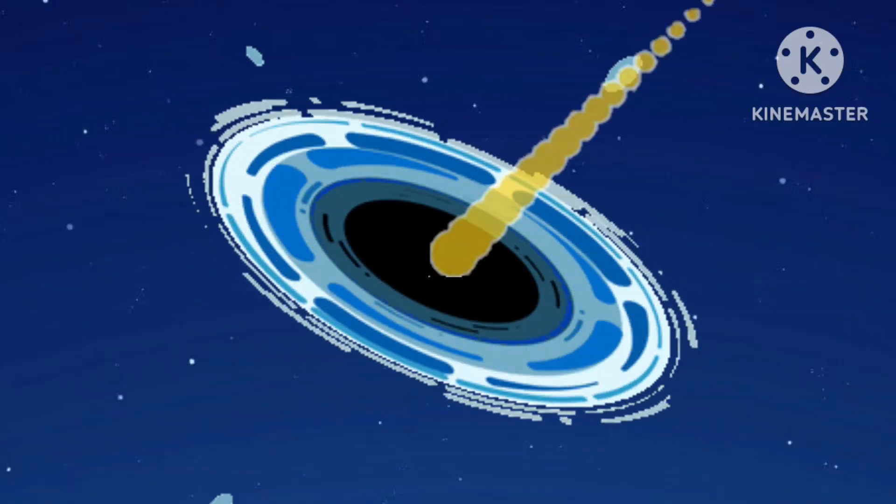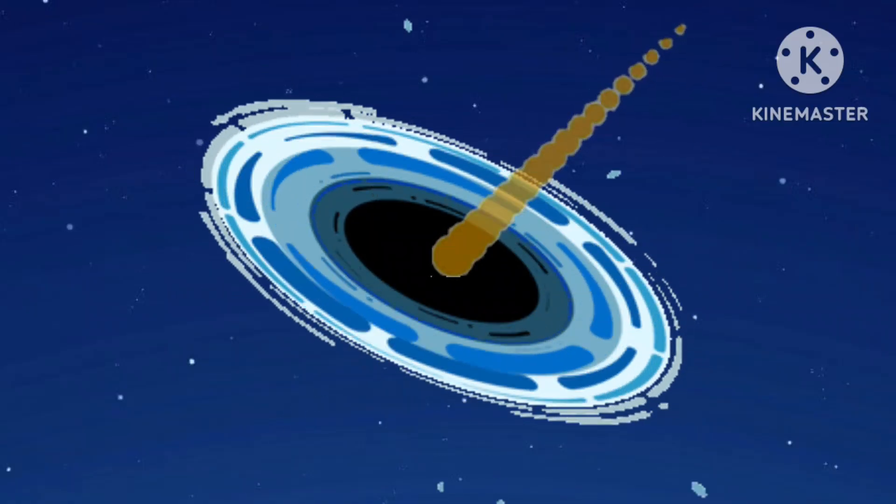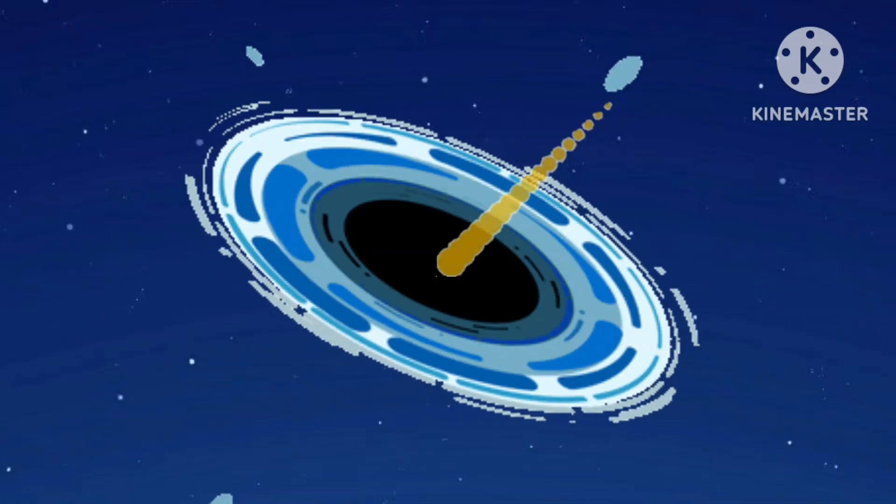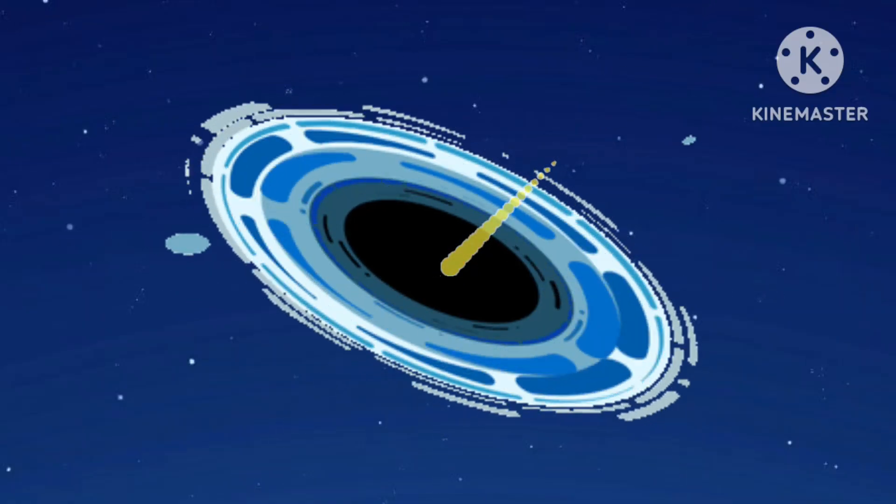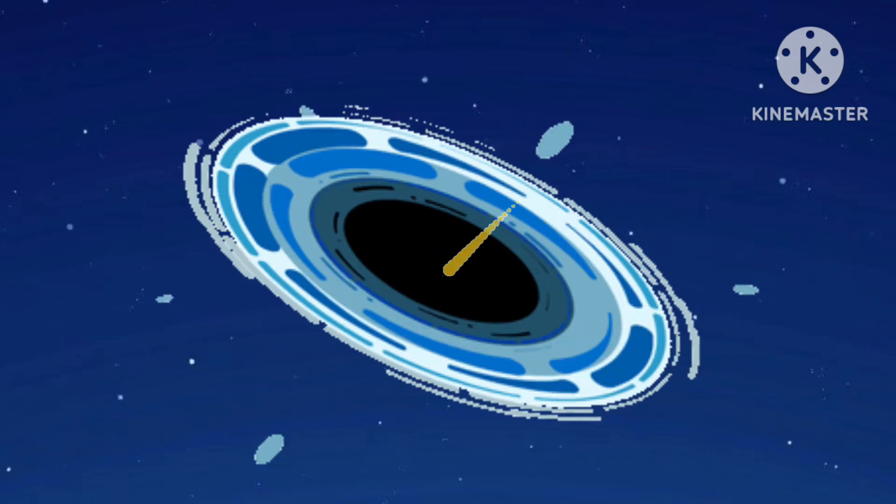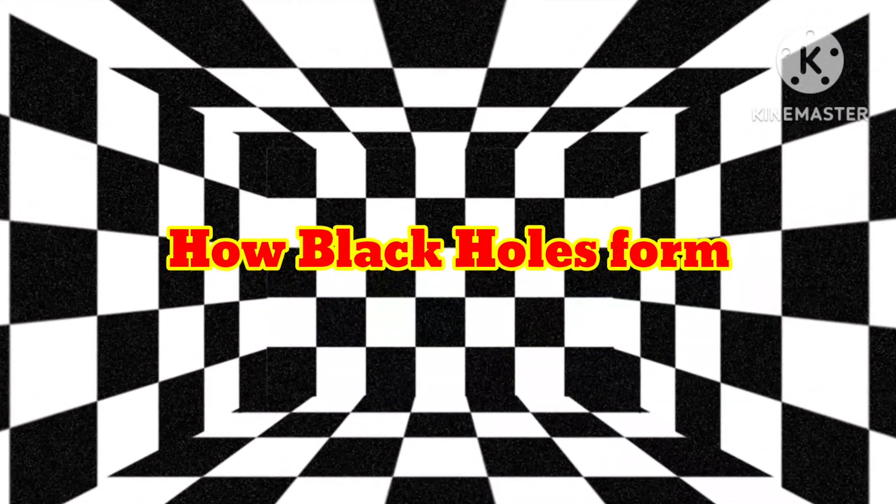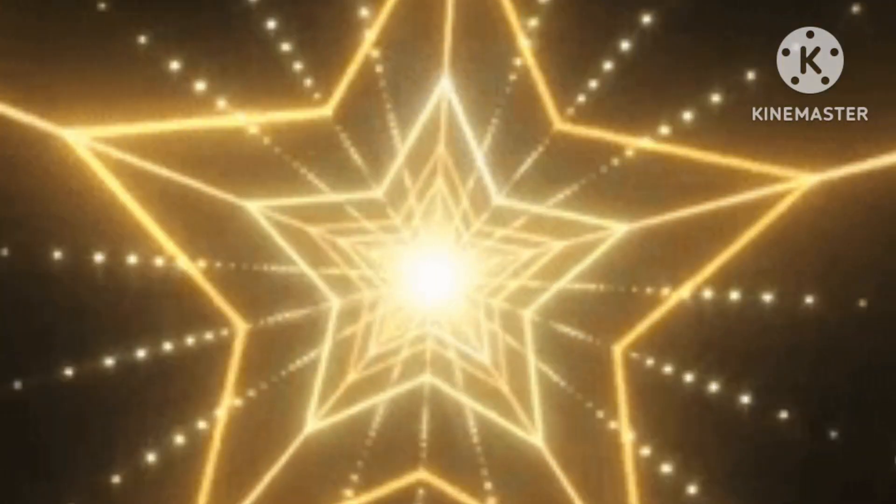Since light cannot bounce off a black hole and gets trapped inside, that's what makes them invisible and are called black holes. Now let's see how black holes form. Black holes are formed from a star.